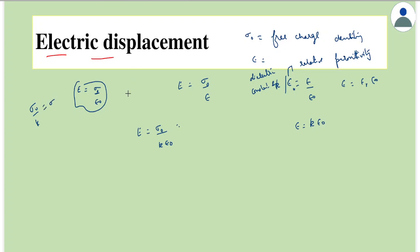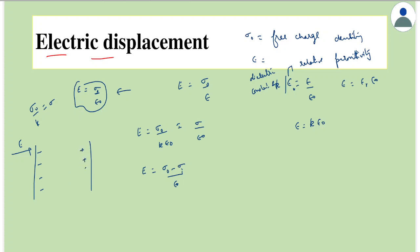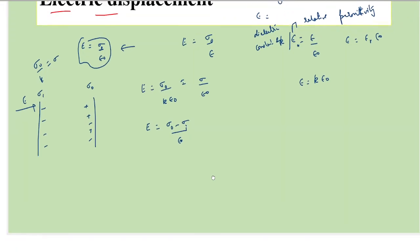The total surface charge density gives E = σ/ε₀, but the free charge and induced charge must be considered separately. So E = (σ₀ - σᵢ)/ε₀, where σᵢ is the induced surface charge density. Recall that in the presence of an external electric field, a negative charge is induced on one side and a positive charge on the other side, giving us induced surface density σᵢ.